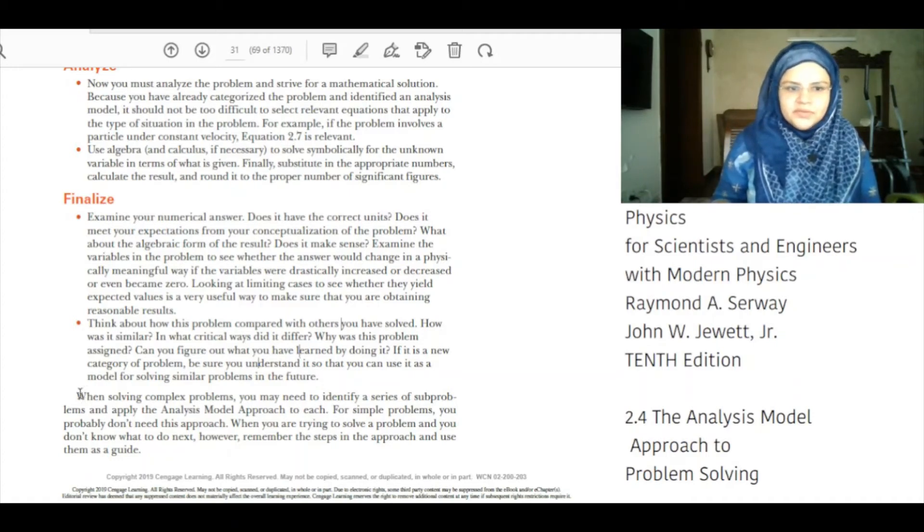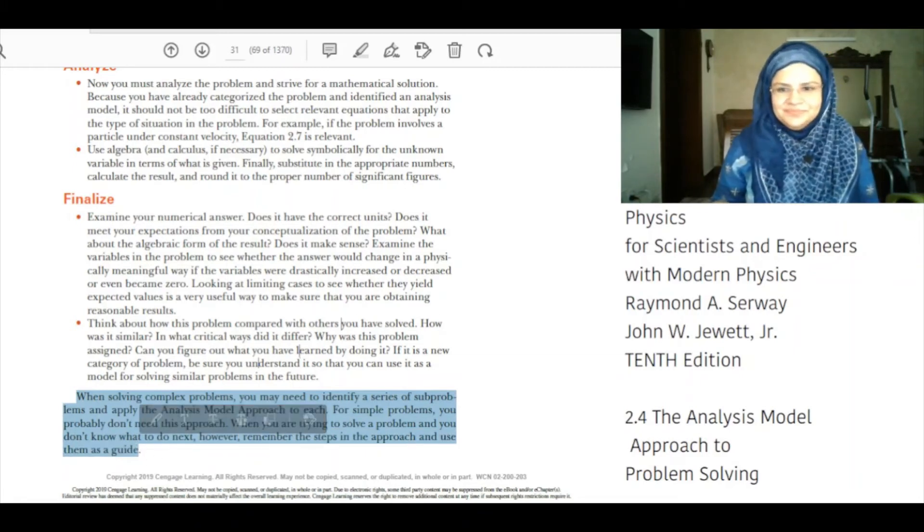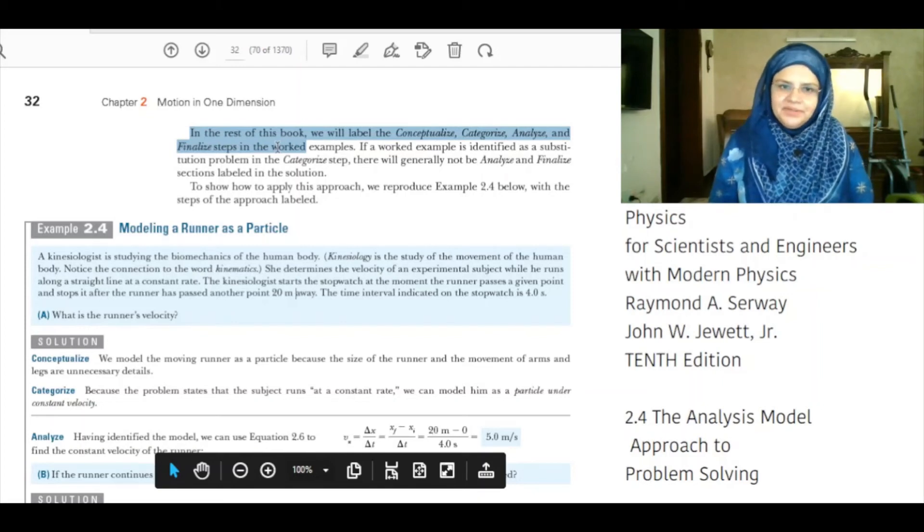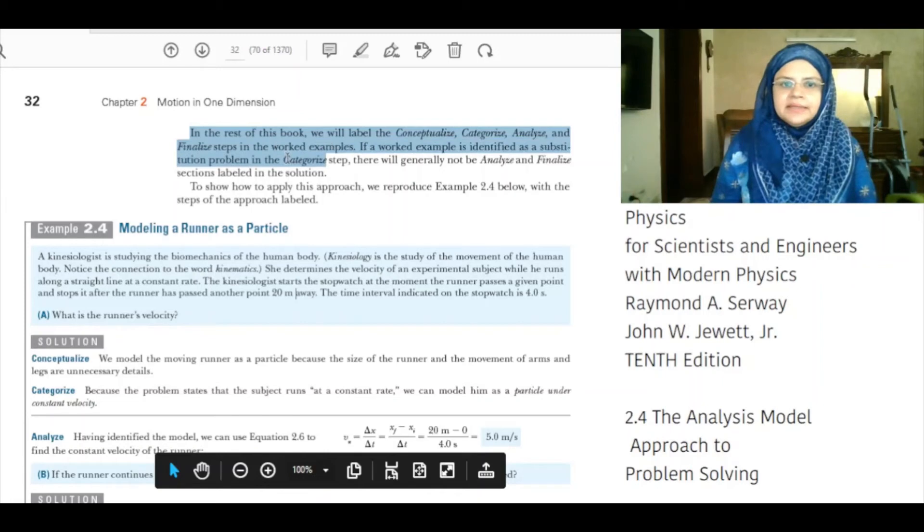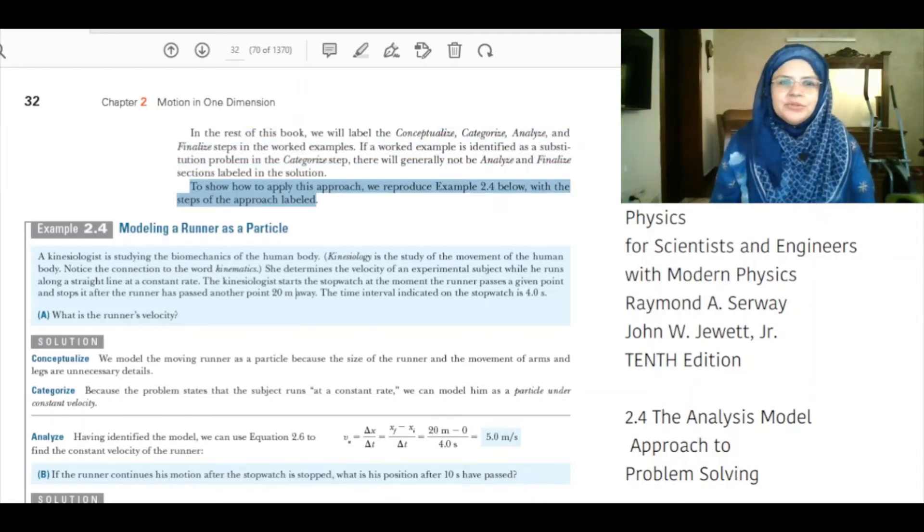When solving complex problems, you may need to identify a series of sub-problems and apply the analysis model approach to each. For simple problems, you probably don't need this approach. When you are trying to solve a problem and you don't know what to do next, however, remember the steps in the approach and use them as a guide. In the rest of this book, we will label conceptualize, categorize, analyze, and finalize steps in the worked examples. If a worked example is identified as a substitution problem in the categorize step, there will generally not be analyze and finalize sections labeled in the solution. To show how to apply this approach, we reproduce example 2.4 below with the steps of the approach labeled.